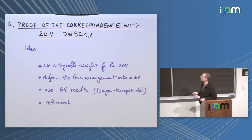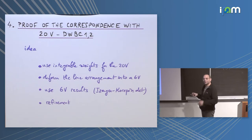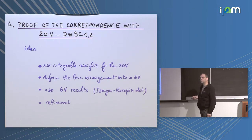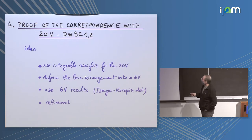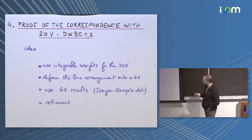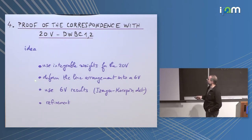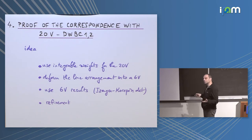The correspondence is that of course these two sequences are going to be the same. The number of configurations with domain-wall boundary conditions 1 and 2 of the 20-vertex model — the APMs — are counted by the same numbers as the domino tilings of quarter-turn symmetric Holy Aztec Square. To show this, we already computed the number of tilings, so let's turn now to the 20-vertex model. What we'll do is: first use integrable weights — cook up an integrable system for which the 20-vertex configurations arise. Then deform the line arrangement of the 20-vertex into the line arrangement that produces the six-vertex model, and then use six-vertex results. That's the program.